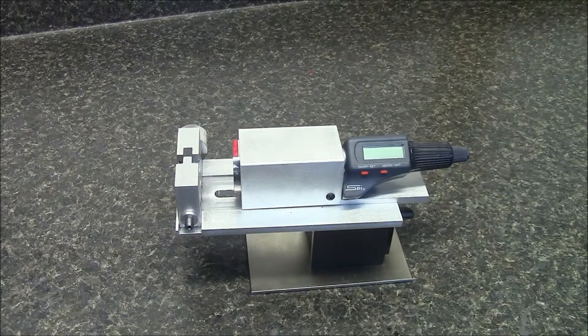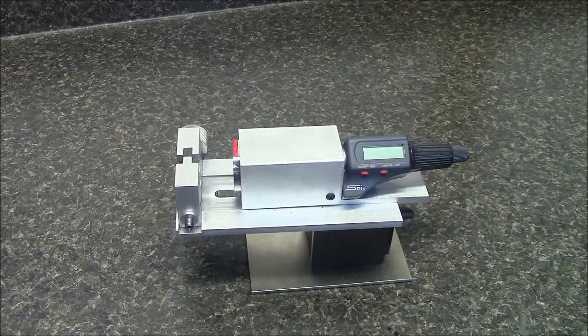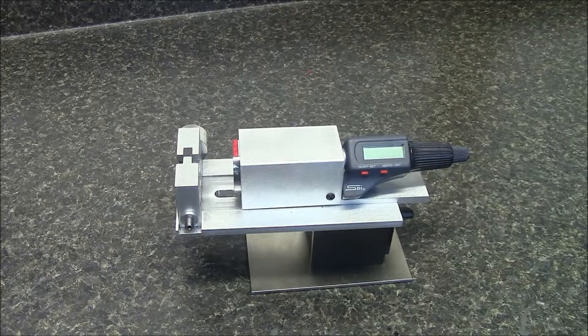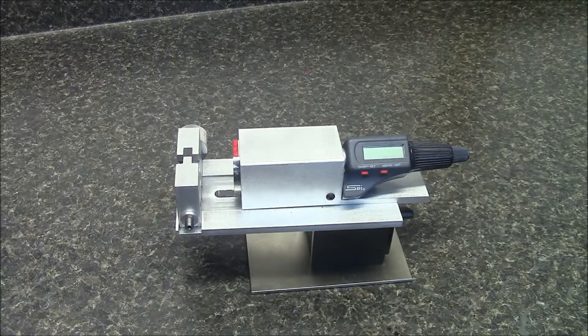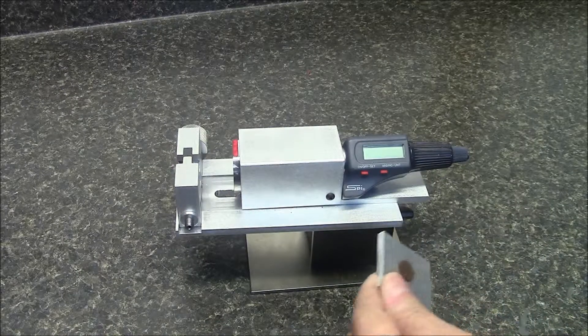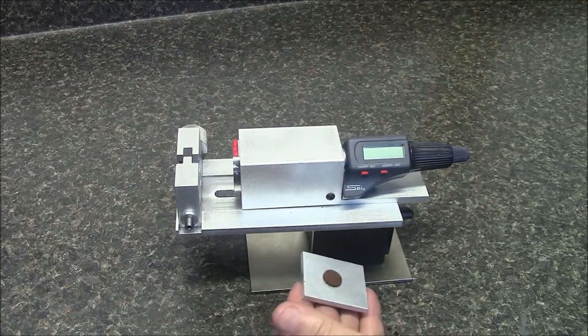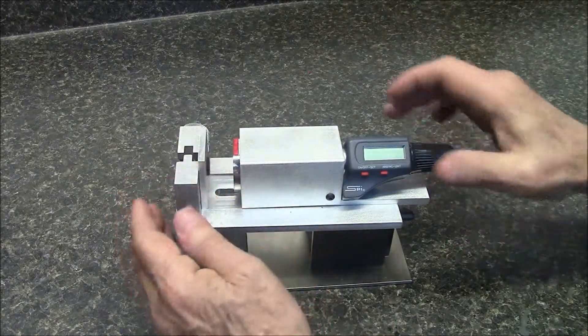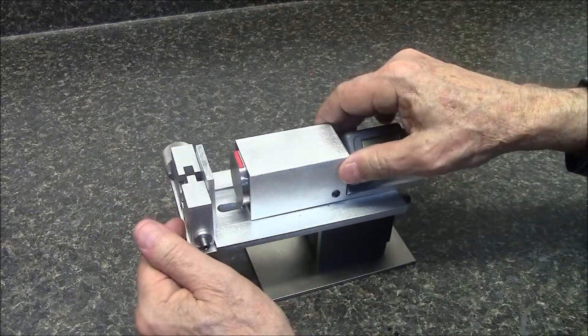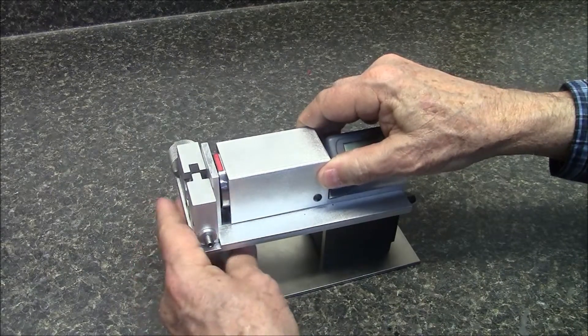During our 4 plus years of making eddy probe calibrators we have found that most calibrator damage occurs during shipping. For that reason we have added a shipping support plate that has a felt pad. It is located between the grippers and the target material. Press the target material forward and lock it in place.